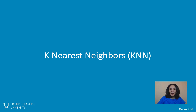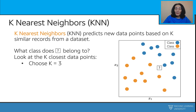The k-nearest neighbor algorithm, also known as the KNN algorithm, is a supervised learning algorithm that can be used for both regression and classification problems. It predicts new data points based on k-similar records from a dataset.